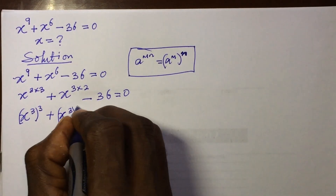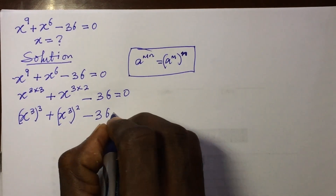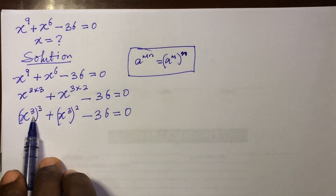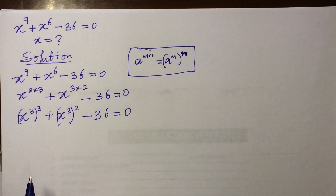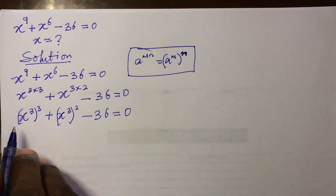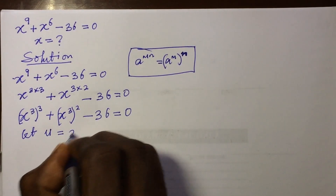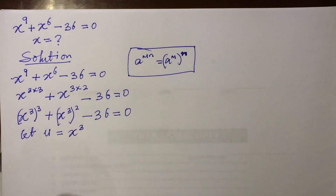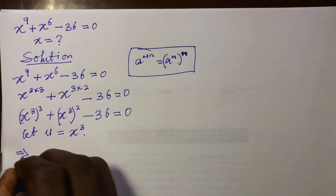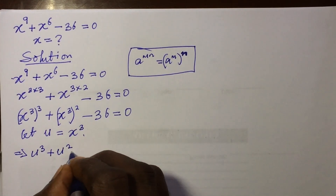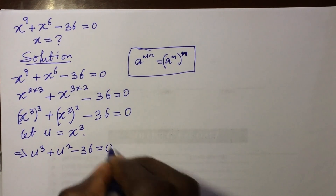We now discover that we have x to the power of 3 in the first bracket and x to the power of 3 in the second bracket. So we bring in another variable to represent x³. Let u = x to the power of 3. That means wherever we see x³, we put in u. So our equation becomes: u to the power of 3 plus u to the power of 2 minus 36 equals 0.